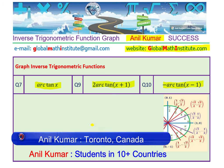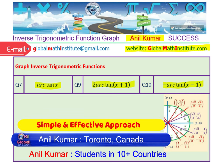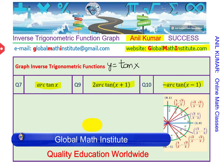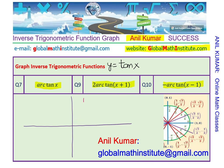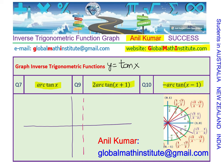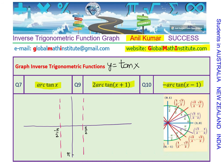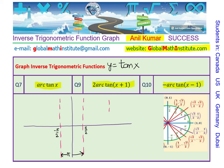Let us begin with the basic characteristics of tan x, so y equals tan x. This graph of tan x is periodic with a period of pi, not 2 pi. We have vertical asymptotes at every odd multiple of pi by 2. The vertical asymptotes shown here are at minus pi by 2 and at pi by 2. This is the period of pi we are talking about, and the function repeats, so at every odd multiple of pi by 2 we have a vertical asymptote.